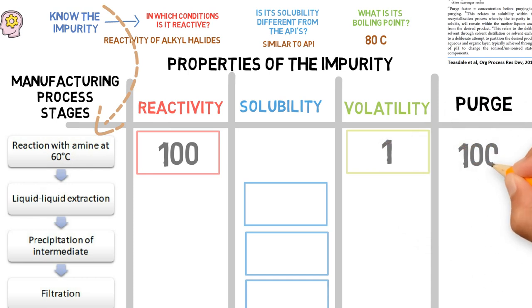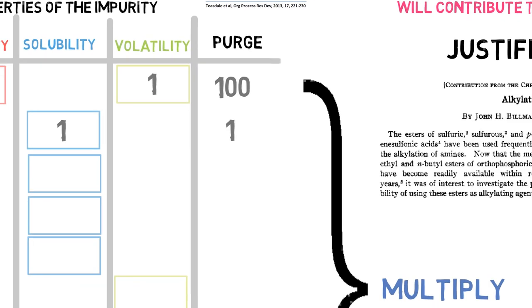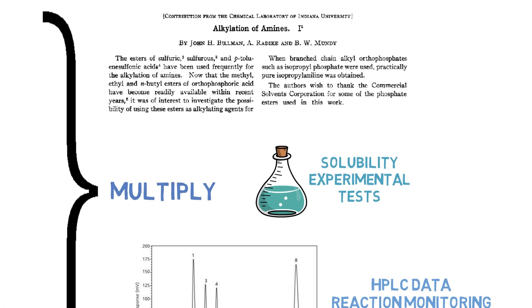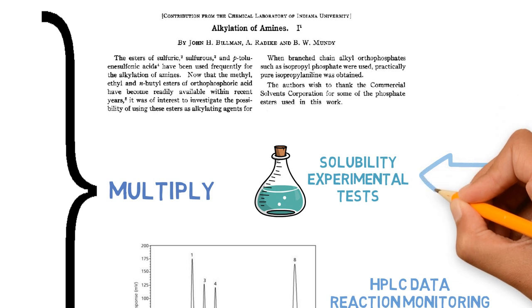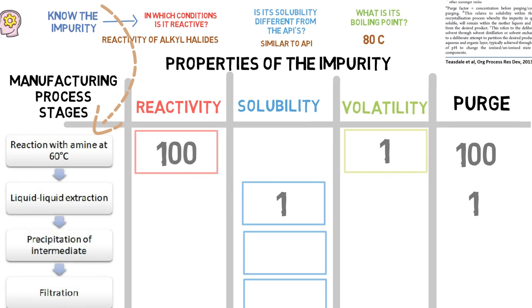In the extraction, the impurity remains in the same liquid phase as the next intermediate. Hence, this does not separate one from the other. The solubility factor is then given as 1. In the precipitation, the impurity is not precipitated, and this may have been proven through experimental tests. Hence, a solubility factor of 10 is given.